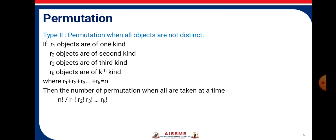Type 2. Permutation when all objects are not distinct. If r1 objects are of one kind, r2 are of second kind, r3 are of third kind, rk of kth kind, where r1+r2+r3+...+rk = n, then the number of permutation when all are taken at a time is n! / (r1! × r2! × r3! × ... × rk!).